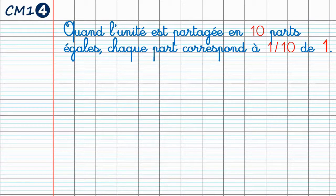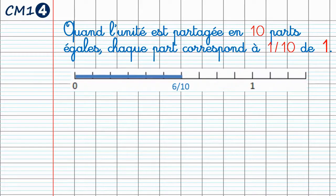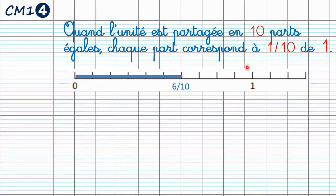Quand l'unité est partagée en 10 parts égales, chaque part correspond à 1 dixième de l'unité. Nous voyons l'unité ici est représentée par l'espace qu'il y a entre le 0 et le 1. Nous voyons qu'elle est divisée en 1, 2, 3, 4, 5, 6, 7, 8, 9 et 10 parts égales. La partie représentée en bleu sur l'exemple correspond à 6 dixièmes.